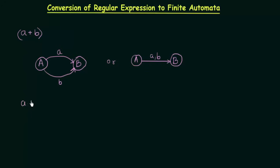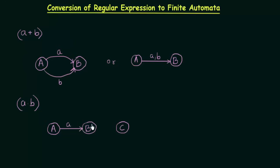There is another expression we are familiar with: expressions of the form A dot B, or sometimes represented as just AB. When you have expressions of this form, you need to have three states A, B, and C. We can say that A will go to the next state B on getting input small 'a', and B will go to the next state C on getting input small 'b'. Unlike the union case where it goes to the next state on either A or B, here you have to specify two different transitions for inputs A and B separately.